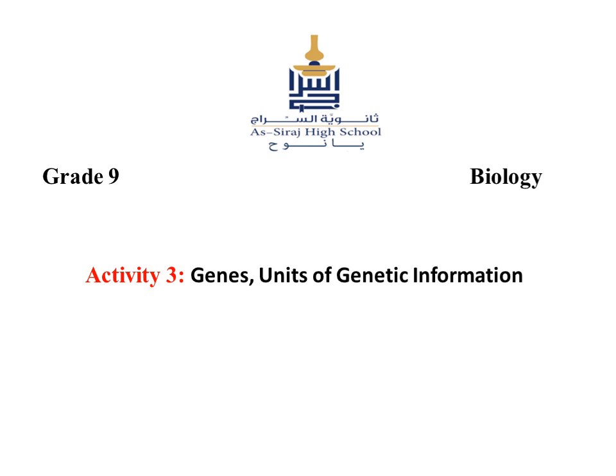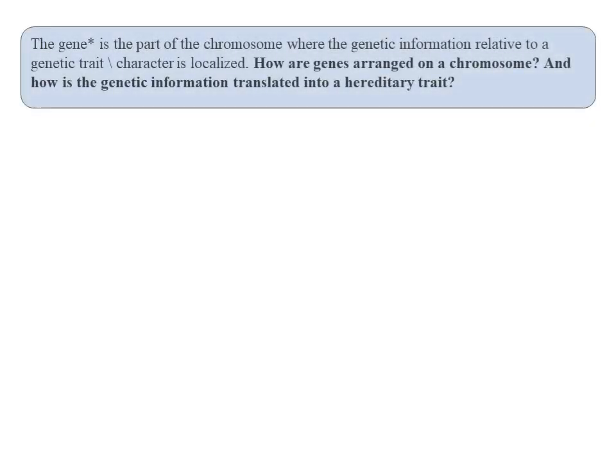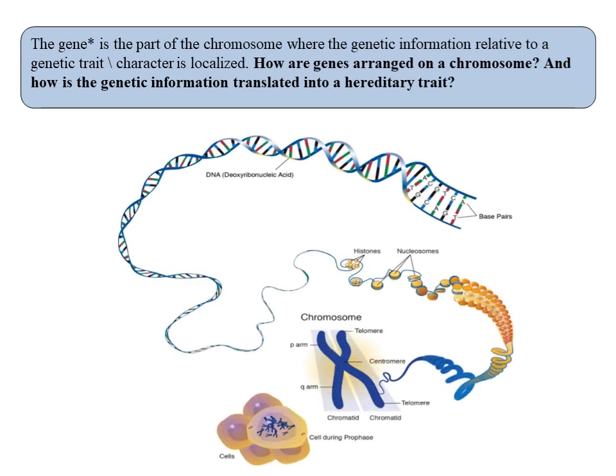Hello, guys. We'll start a new activity which is Activity 3 about genes — units of genetic information. The gene is the part of the chromosome where the genetic information relative to a genetic trait or character is localized. How are genes arranged on a chromosome, and how is that genetic information translated into a hereditary trait? The nucleus carries the genetic information of the cell, and each human cell contains 46 chromosomes.